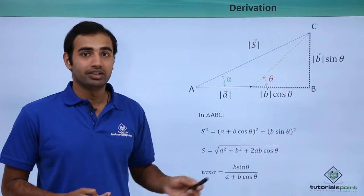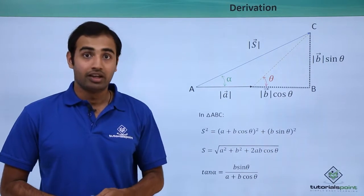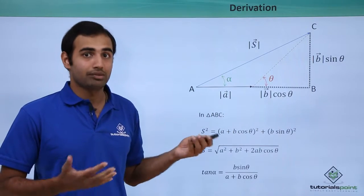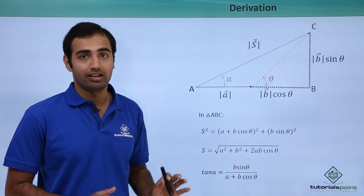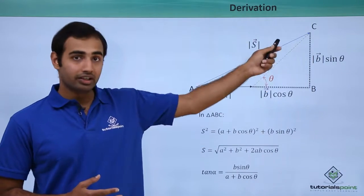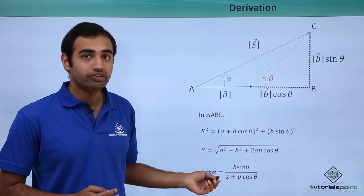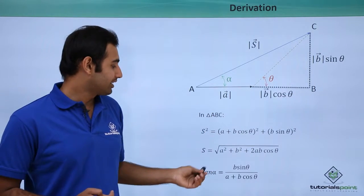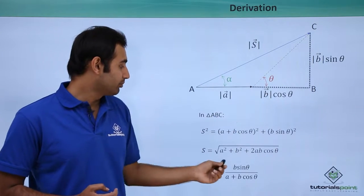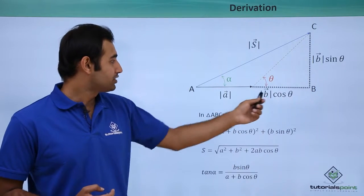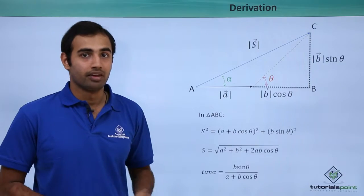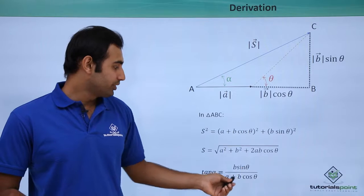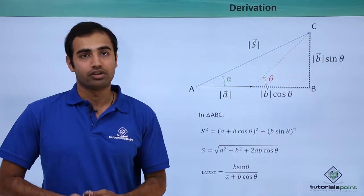With this equation I have obtained the magnitude of the resultant. I am also interested in the direction, which means the value of angle alpha. In this same triangle, tan alpha equals perpendicular upon base, which is b sin theta upon (a + b cos theta). So angle alpha equals tan inverse of b sin theta upon (a + b cos theta).